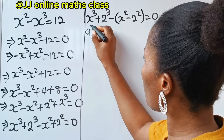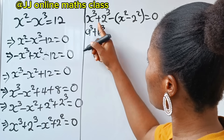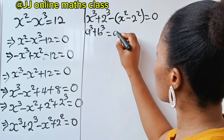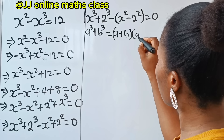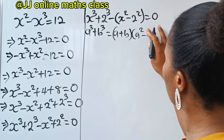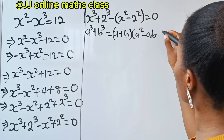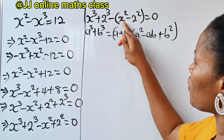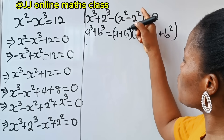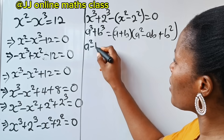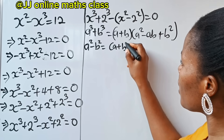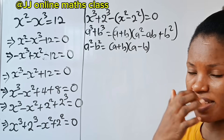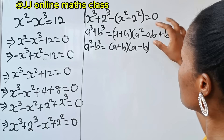Now, a to the power of 3 plus b to the power of 3 is an algebraic identity which is equal to a plus b multiplied by a squared minus ab plus b squared. Also note that x squared minus 2 squared is in the form a squared minus b squared, which is equal to a plus b multiplied by a minus b — this is the difference of two squares.